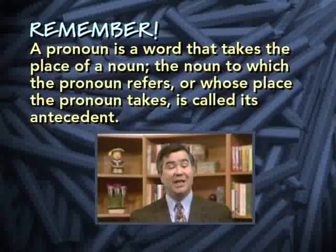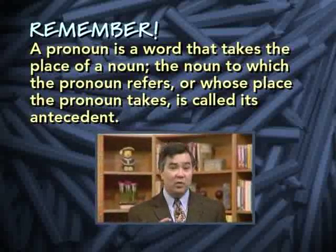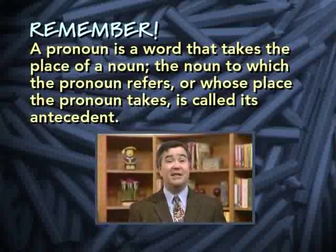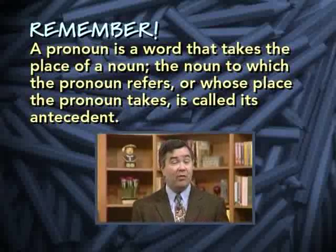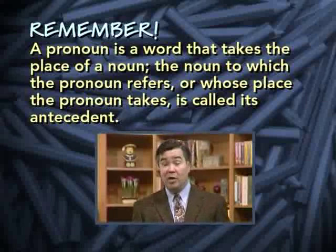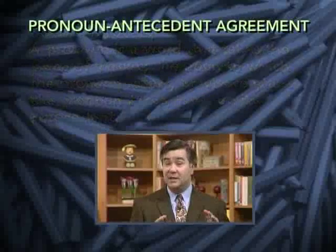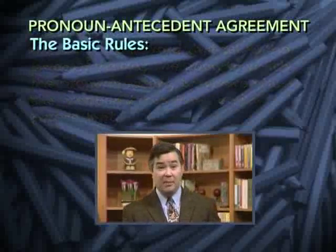So far, we've been talking about agreement between subjects and verbs. In this lesson, we're going to talk about agreement between pronouns and antecedents. As you know, a pronoun is a word that takes the place of a noun. And the noun to which the pronoun refers, or whose place the pronoun takes, is called its antecedent. The antecedent may or may not appear in the same sentence or paragraph. It's important that the pronoun and its antecedent match in a couple of ways.